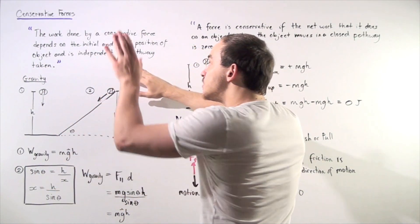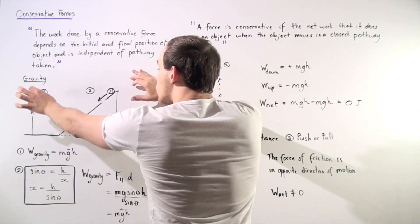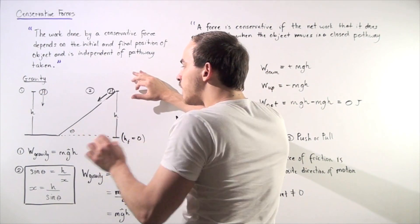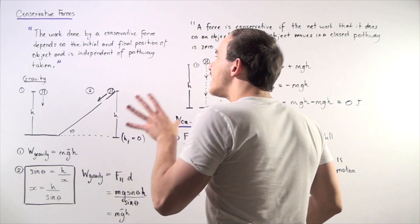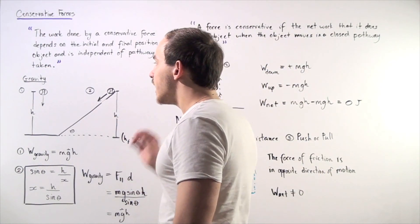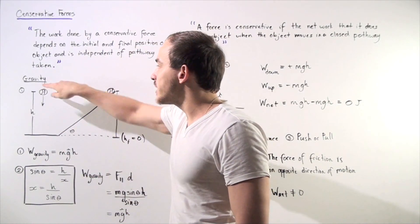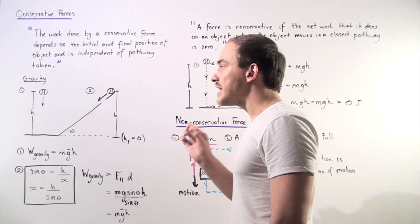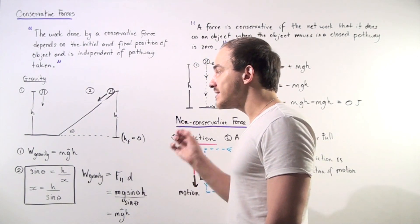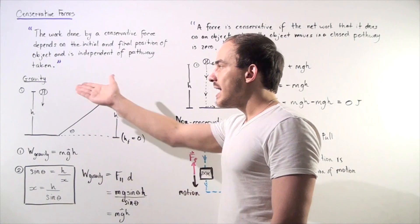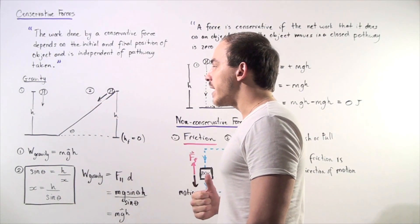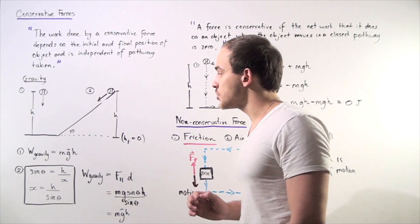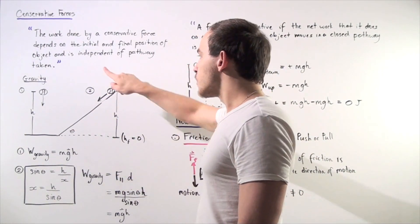Our initial and final points are exactly the same, but the pathways our balls take differ. If gravity is, in fact, a conservative force, the work done by gravity on both objects should be exactly the same because our initial and final points are identical. So let's show that. In case one, the net force points in the same direction as displacement, so the work equals force times displacement: m times g times h.